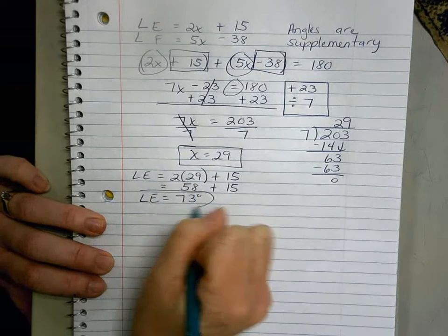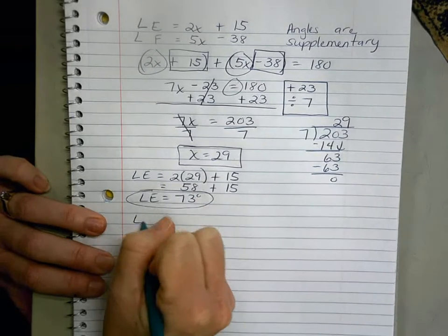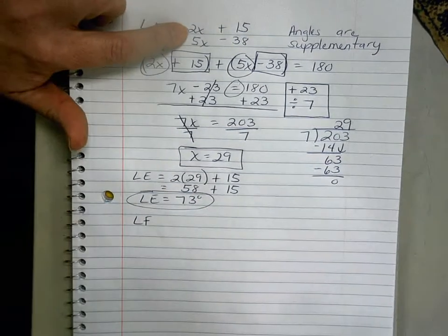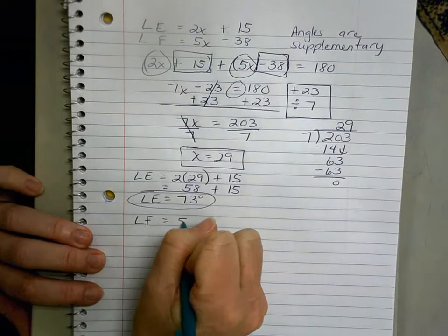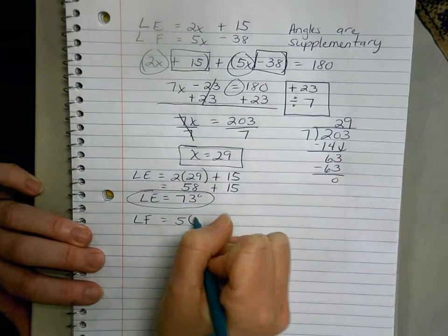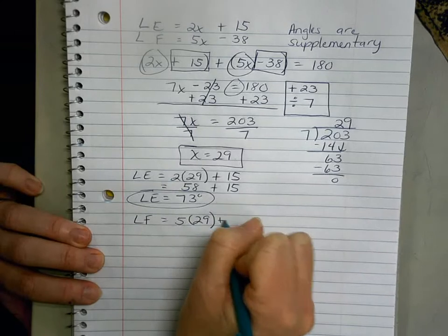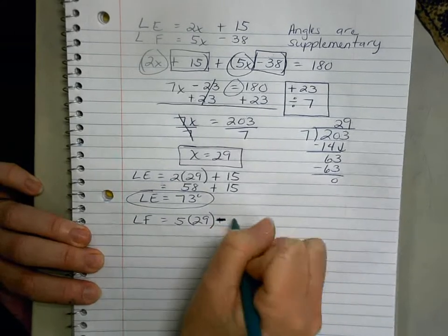Angle F, our expression was 5x minus 38. x is 29, so I can substitute 5 times 29 minus 38.